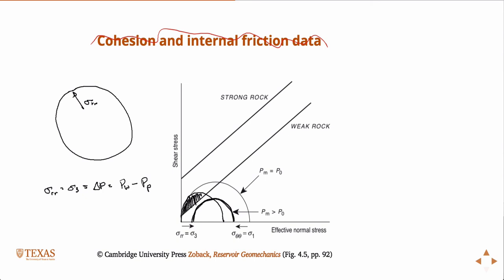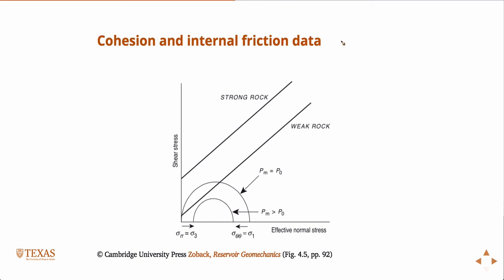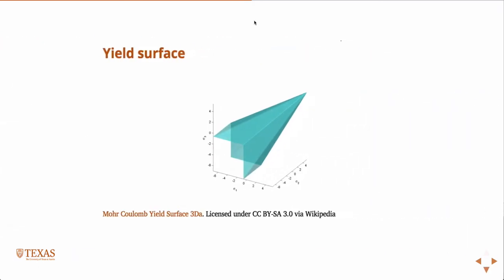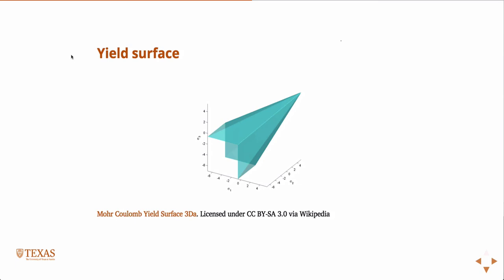This shows how you can visually use Mohr circles for a drilling application. We'll talk a lot more about wellbore stability right after spring break. What we're going to look at next is a plot of the yield surface in what we call stress space — a sigma-1, sigma-2, sigma-3 principal stress space.